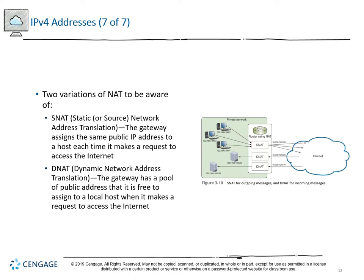There are two variations of NAT: static and dynamic. Static address translation means the gateway assigns the same public IP address to a host each time it accesses the external network. Dynamic NAT — DNAT — means the gateway has a pool of public addresses it can assign to a local host. When browsing multiple pages, there's no guarantee the same public IP is used each time; it may shift to another for load balancing, distributing traffic across interfaces for smoother information flow.